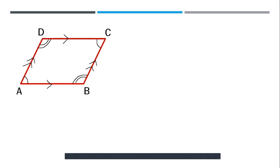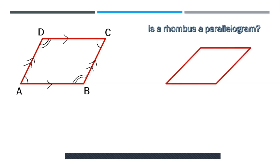Then there comes a question: is a rhombus actually a parallelogram? Many have asked this before. Let's take a look at this rhombus — let's name it EFGH. To know if a rhombus is actually a parallelogram, we have to look at the properties of the rhombus. As you can see, EF is parallel to side HG, and EH is parallel to FG. And what about the angles? Angle HEF is equal to angle HGF. So is it a parallelogram?